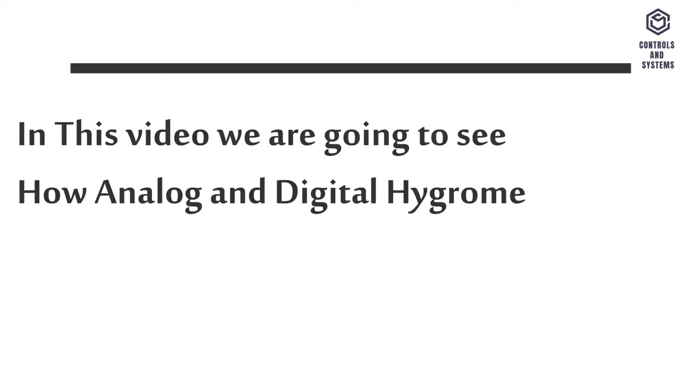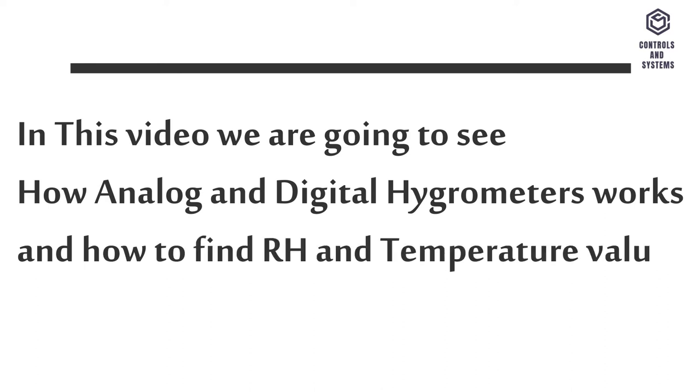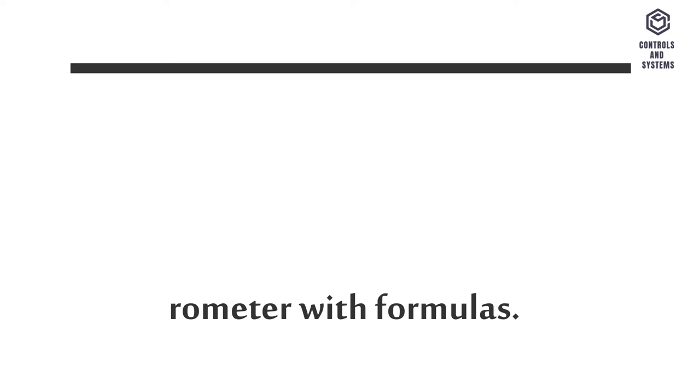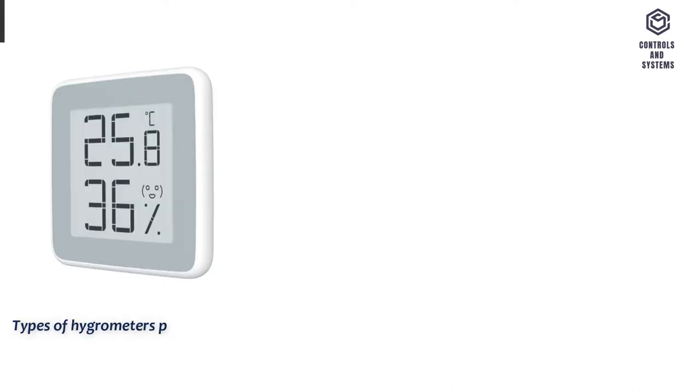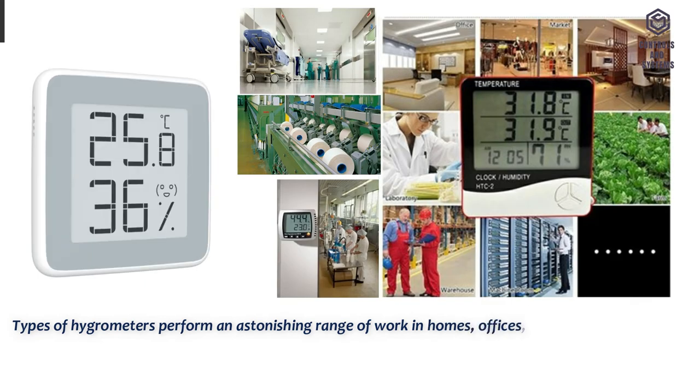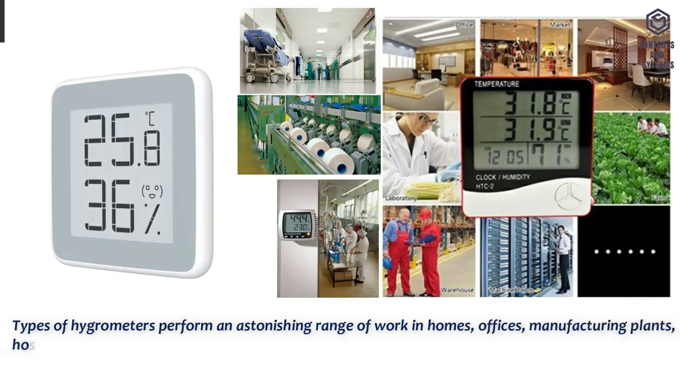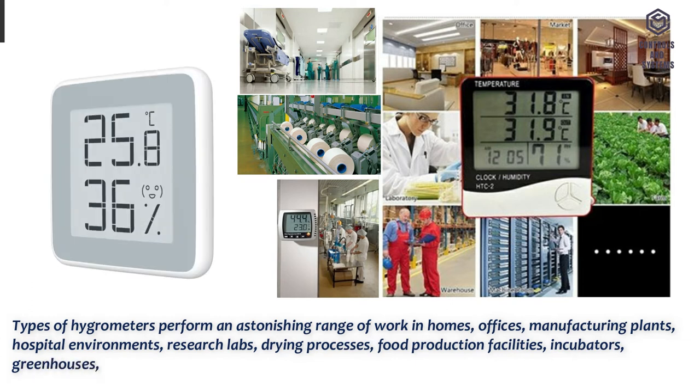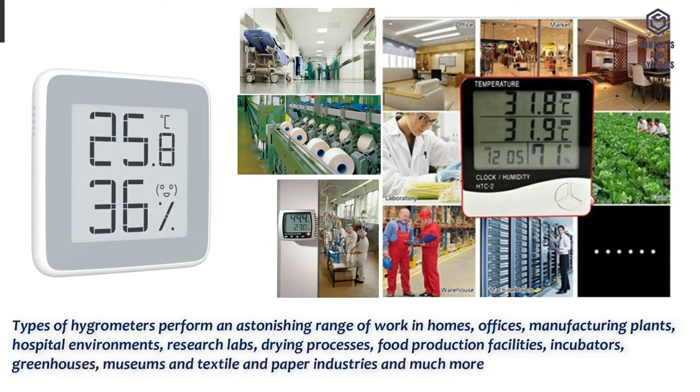In this video we are going to see how analog and digital hygrometers work and how to find RH and temperature value using hygrometer with formulas. Types of hygrometers perform an astonishing range of work in homes, offices, manufacturing plants, hospital environments, research labs, drying processes, food production facilities, incubators, greenhouses, museums and textile and paper industries and much more.